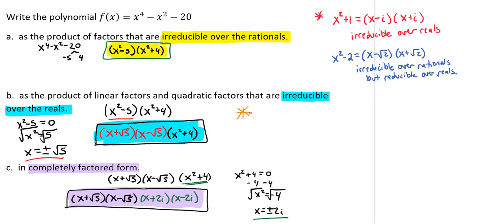On our next step, we had to stop because we were looking for over the reals. And when we solve x^2 + 4, we got ±2i, which is imaginary. So we couldn't go any further. But when we asked to completely factor it, we were able to have rationals, irrationals, reals, and imaginaries.